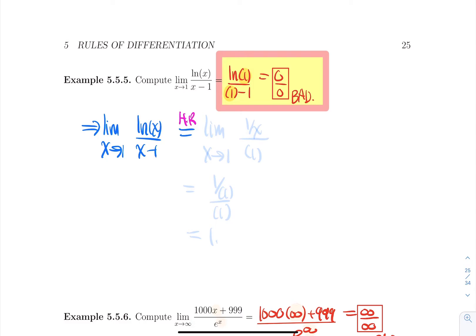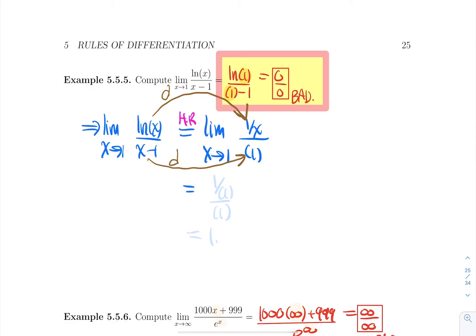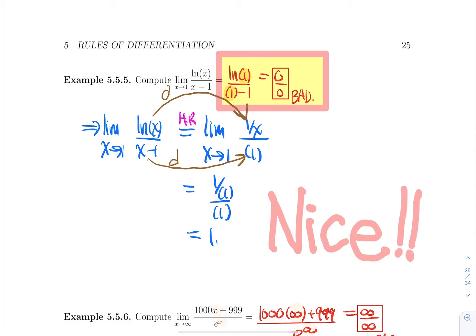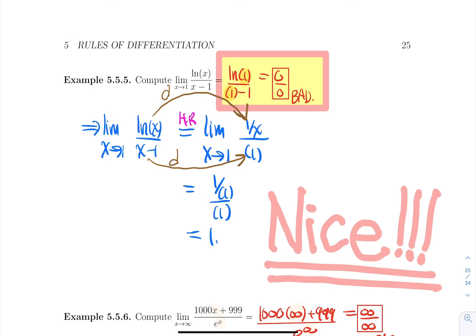Applying L'Hôpital's Rule: the derivative of ln(x) is 1/x, and the derivative of x−1 is 1. So the new limit is (1/x)/1 as x approaches 1, which gives 1/1 = 1. Before, with numerical tables, you'd need values approaching 1 from both sides and could only guess. Now it's no longer a guess — it's a proven result: the limit equals 1.